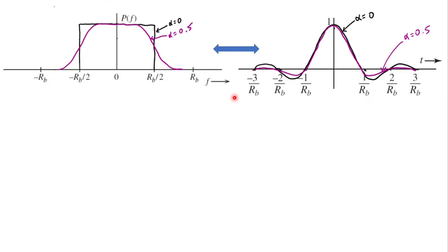Now for the extremum case let us set the value of alpha equal to 1 and the bandwidth has increased to Rb. For this the pulse is having a very small tail as shown by that green waveform.